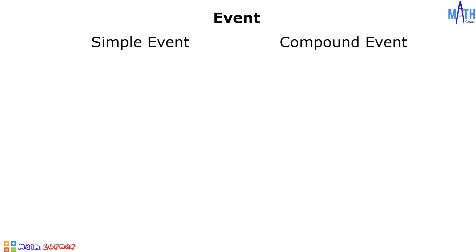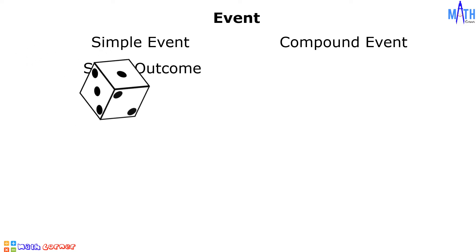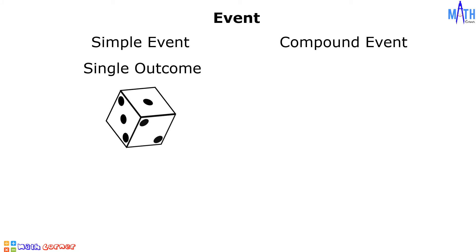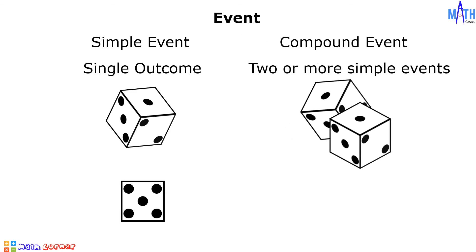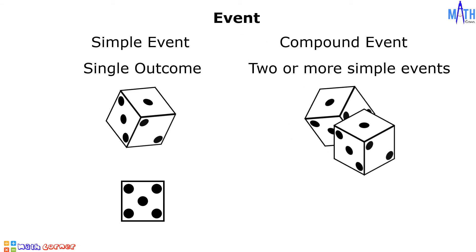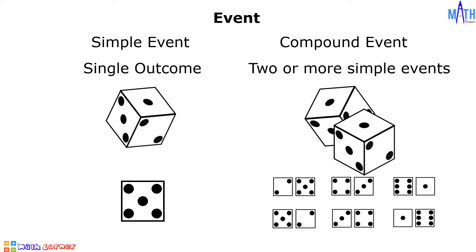An event may be a simple event or a compound event. A simple event consists of a single outcome. For instance, in rolling a die, the event that 5 appears is a simple event. A compound event consists of two or more simple events. Example: in rolling two dice, the event of getting a sum of 7 is a compound event.